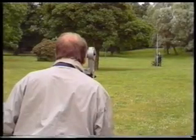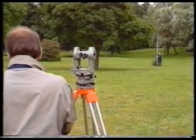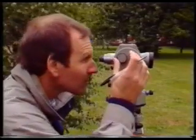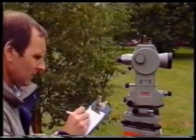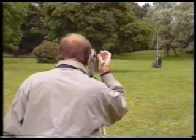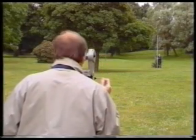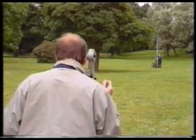As a check, the middle hair reading should be equal to the mean of the stadia hair readings within one or two millimeters. The horizontal circle is read and booked. The vertical circle is read and booked. And a final check is made on the readings before the staff is signaled to move to the next point of detail.